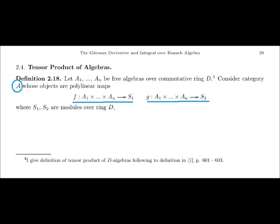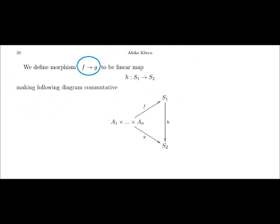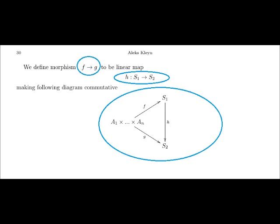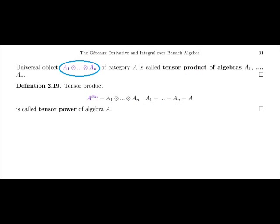Consider category A, whose objects are polylinear maps F and G of algebras A1, ..., AN into the modules S1 and S2. We define a morphism from map F into map G to be a linear map from module S1 into module S2, making the following diagram commutative. The universal object of category A is called the tensor product of algebras A1, ..., AN. The tensor product of algebras A1, ..., AN, where A1 equals ... equals AN equals A, is called the tensor power of algebra A.